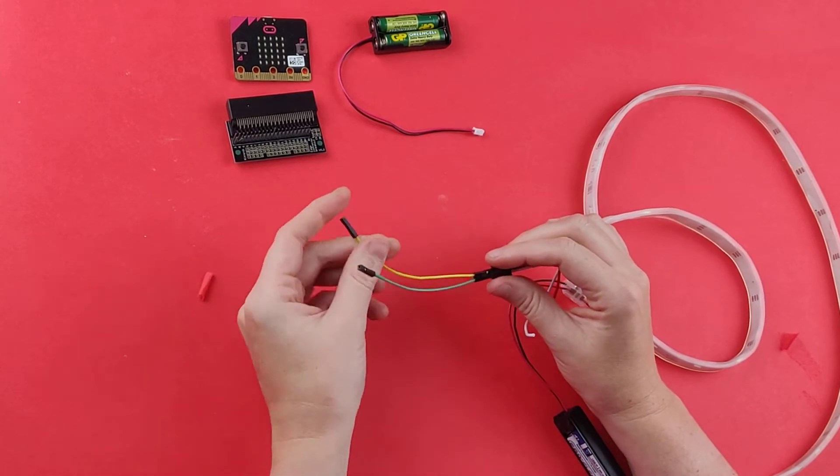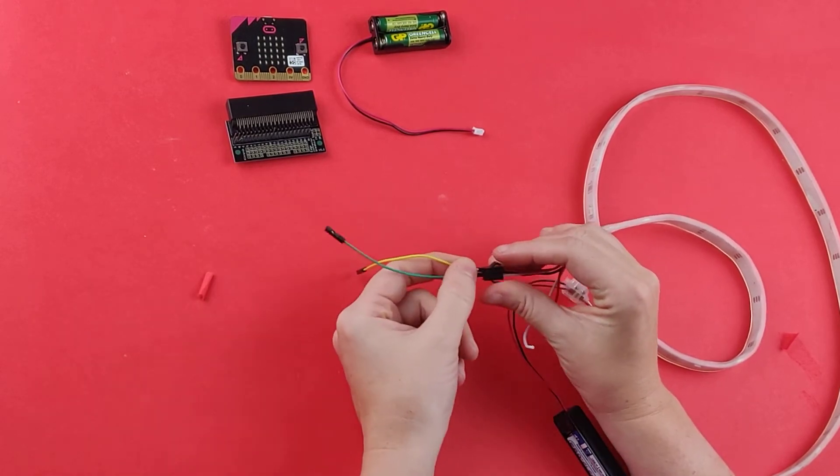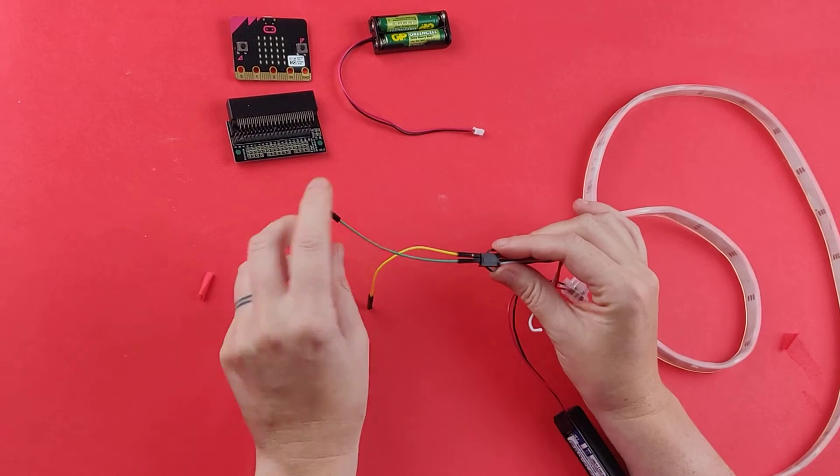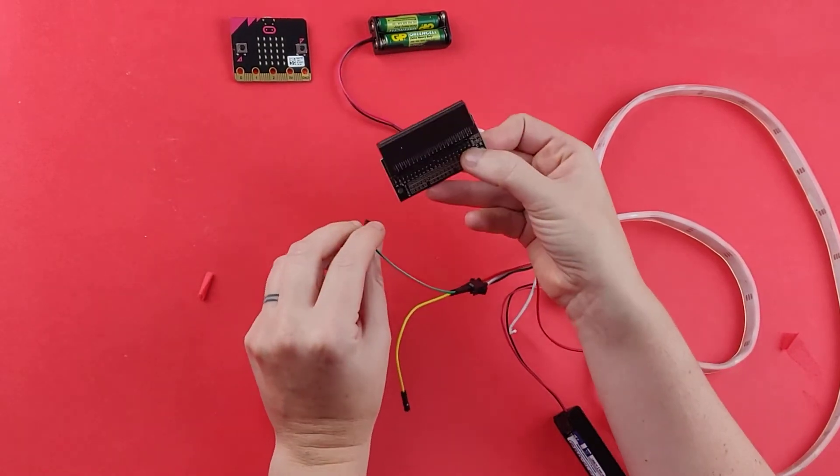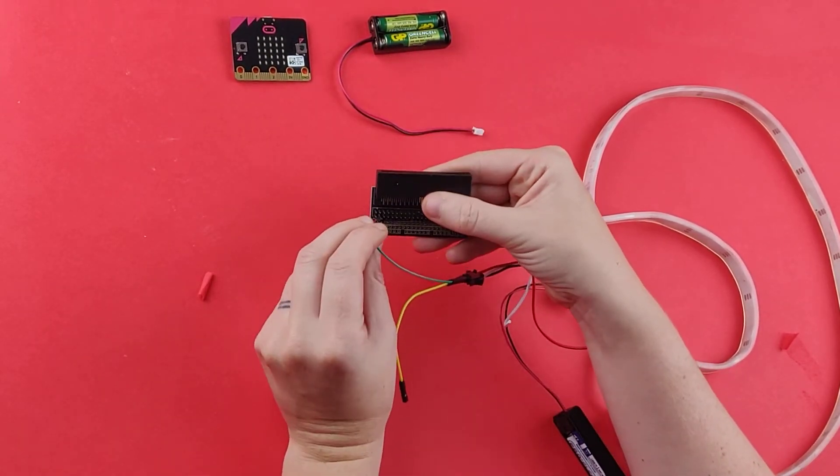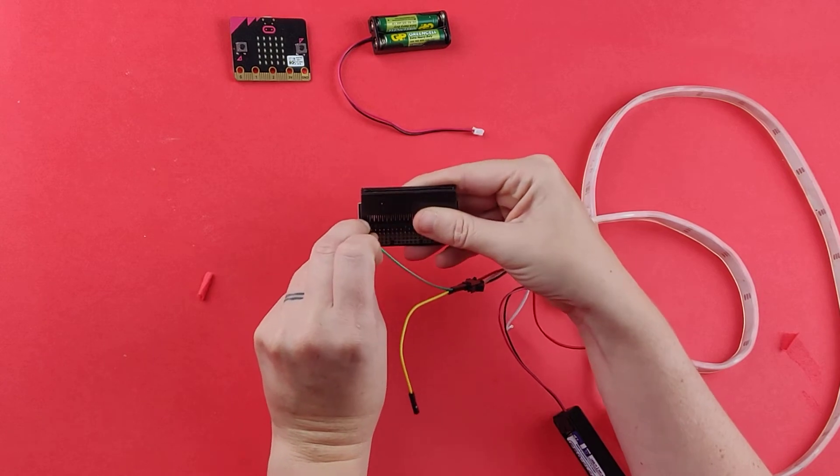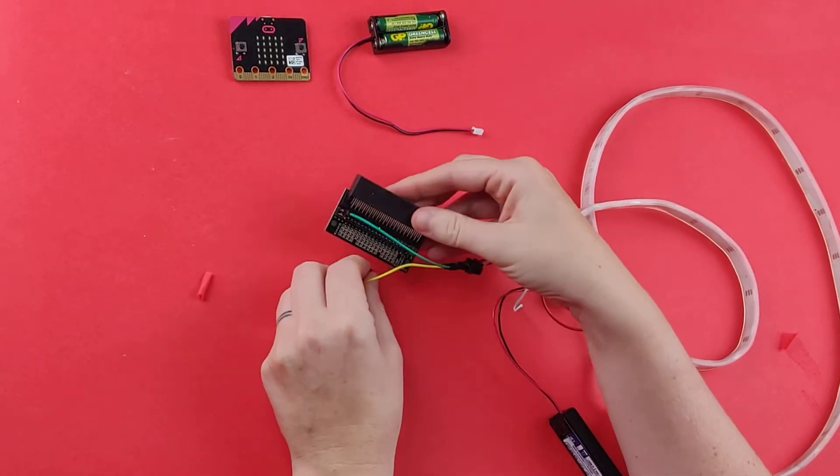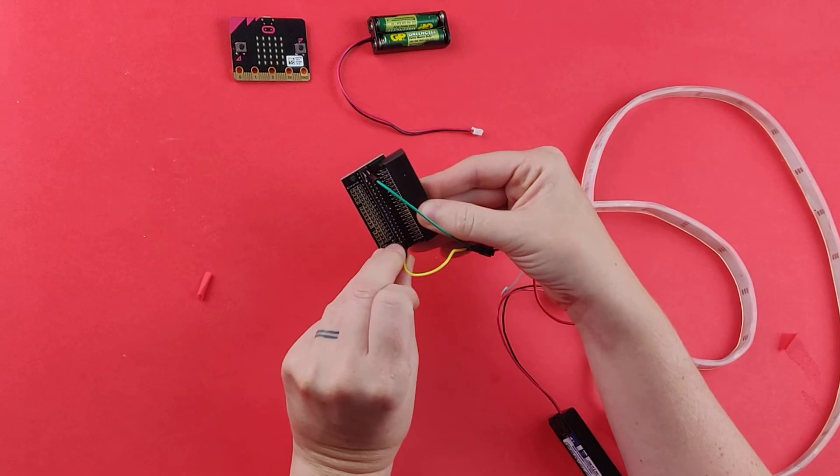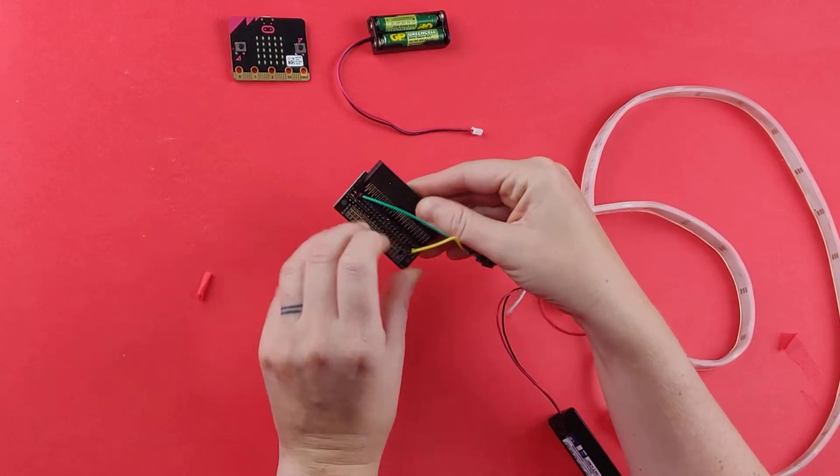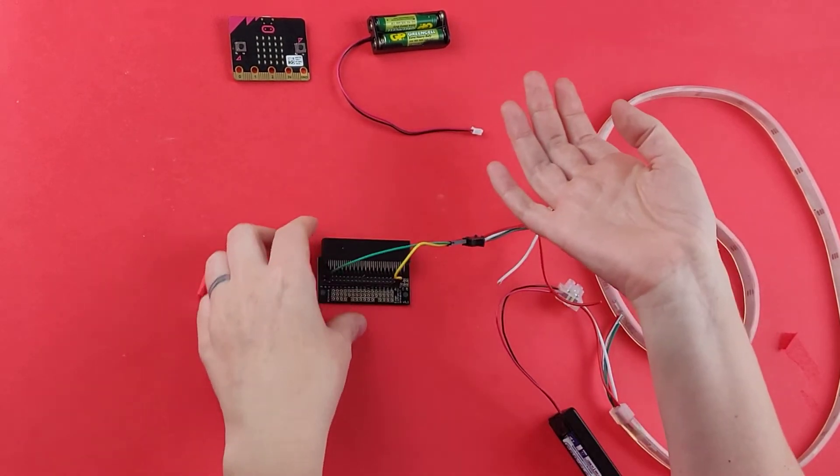So then I'm just going to connect these to the pins on the edge connector. Green is data, I'm going to connect that to pin zero on the edge connector. And yellow or white is ground, I'm going to connect that to zero volts here on the edge connector. I like that connection, it's really secure.